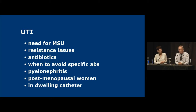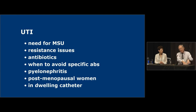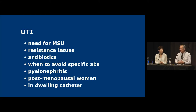Nitrofurantoin is not recommended for prophylaxis now because of interstitial lung problems. There are 50 cases in the last 10 years where ACC have had to compensate people for lung injury. There seems to be an acute situation patients can get, and then people on long-term low dose — although it's effective, there is a risk of interstitial lung disease and we have no idea how to quantify that.